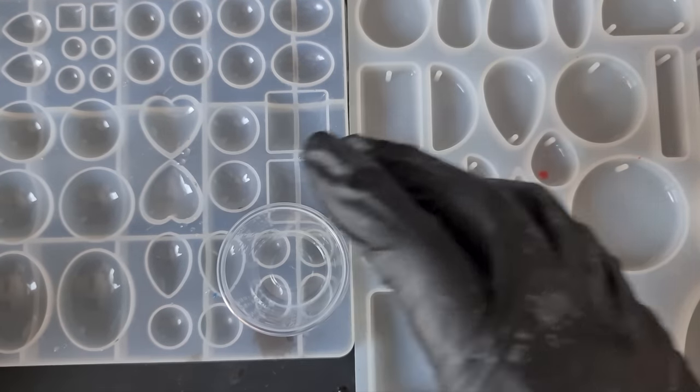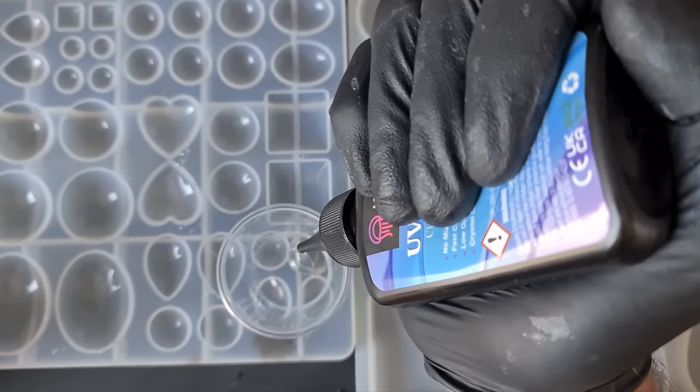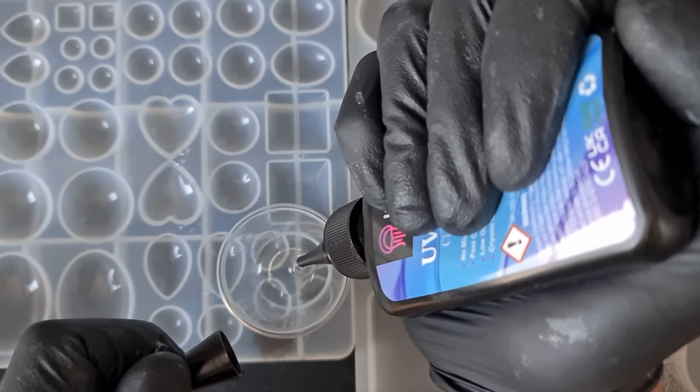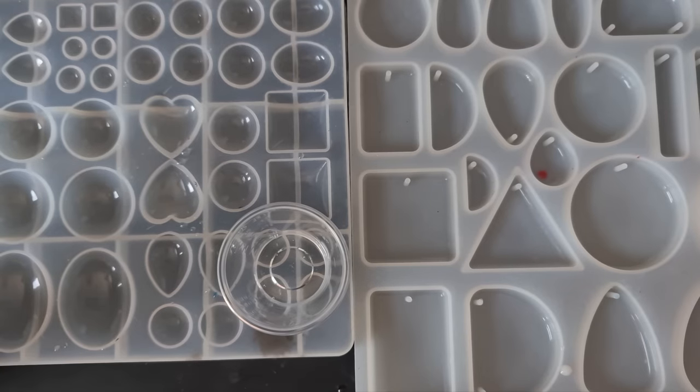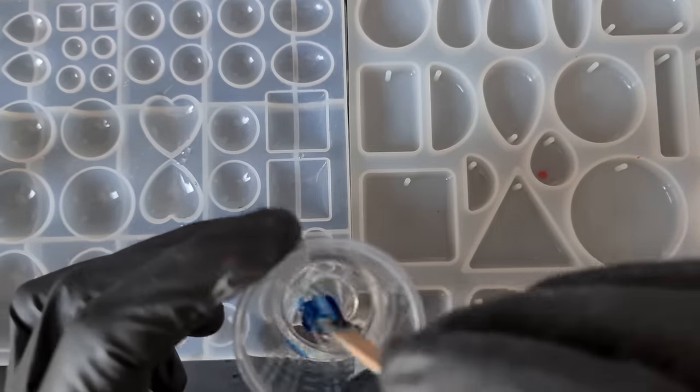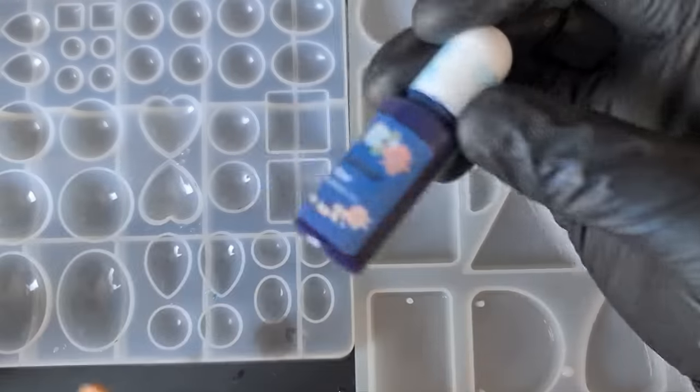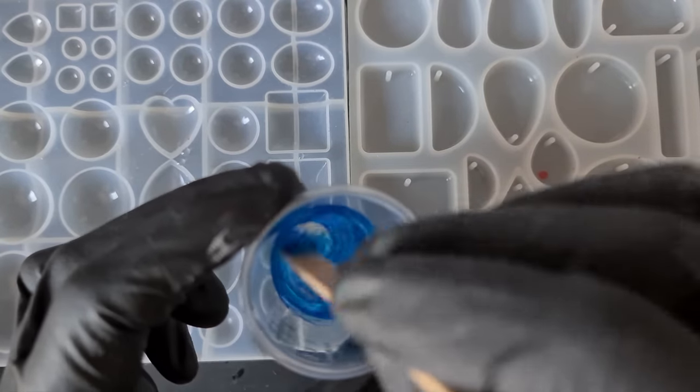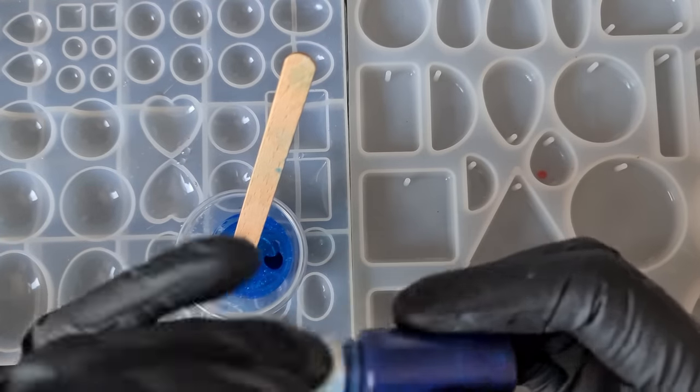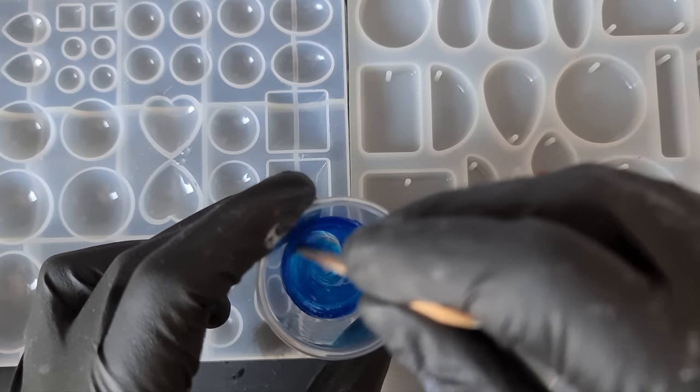This will be kind of like our base, then we can leave that just for the bubbles to rise. Whilst that is doing that, we can mix up our blue. So I'm using the Let's Resin liquid pigment dyes for this. I'm going to go with one drop to begin with and just see how strong it is. I need to add more. Don't do this with the sapphire blue because it will turn green—use the normal blue if you've got these. These are translucent, they are not opaque.